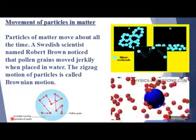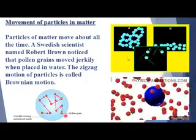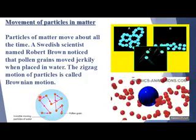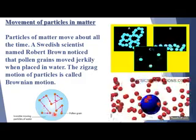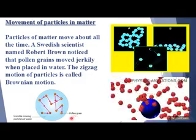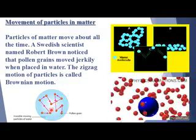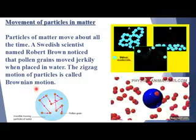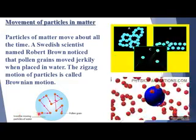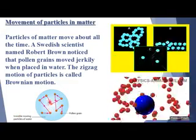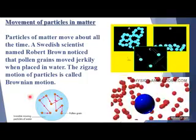The moving particles of water are invisible — we are not able to see the movement in the water. But actually the particles of water are moving. That is why when we place pollen grains on the surface of the water, they move and show a zigzag motion because of the moving particles of the water. This zigzag motion of particles is called Brownian motion.